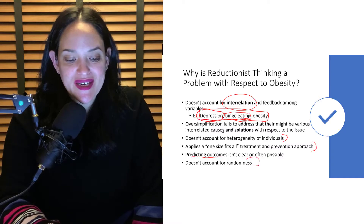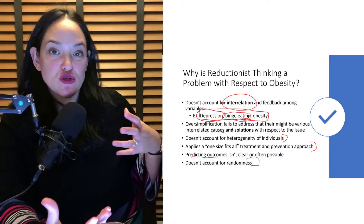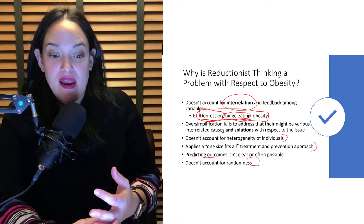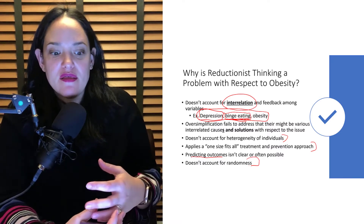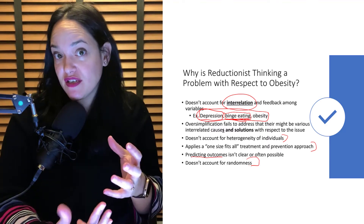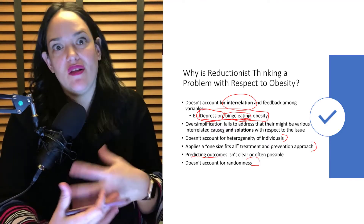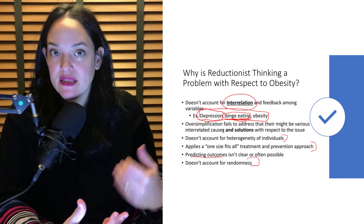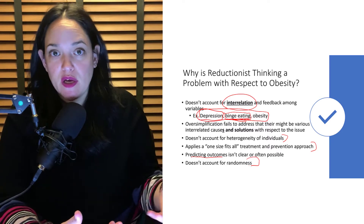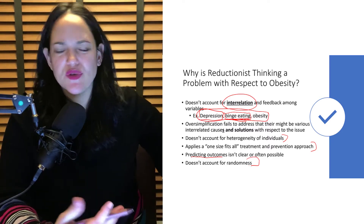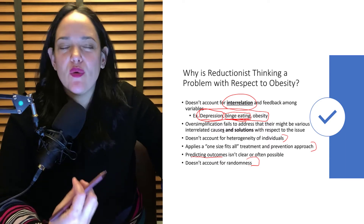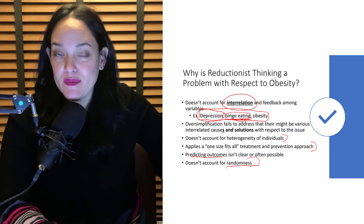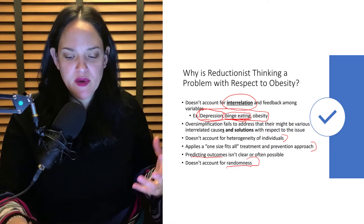Also, when looking at obesity through a reductionist lens, it's harder to predict what's actually going to happen when we apply a particular intervention, and we don't really account for random things that can happen to shift the system. A really good example of this is COVID — the pandemic has really shifted the weight system of Canada and much of the world, where there are even more factors promoting obesity and a lot of people have gained weight. If we just say 'eat less and exercise more,' we're not accounting for all the complex things going on due to something random we weren't expecting.